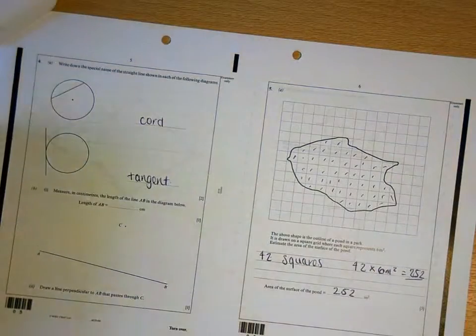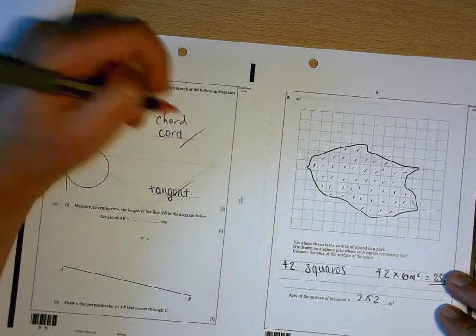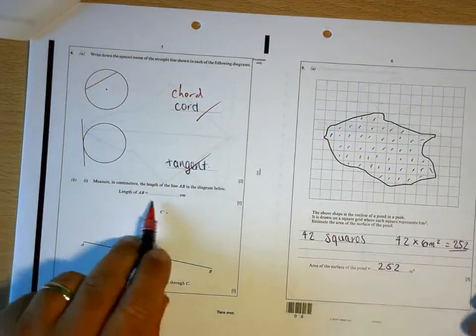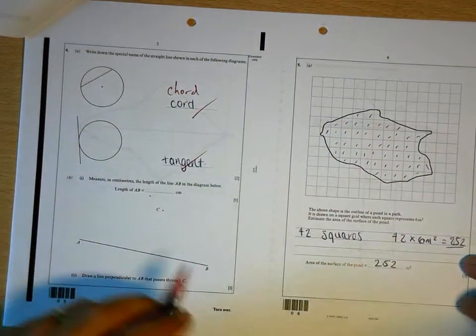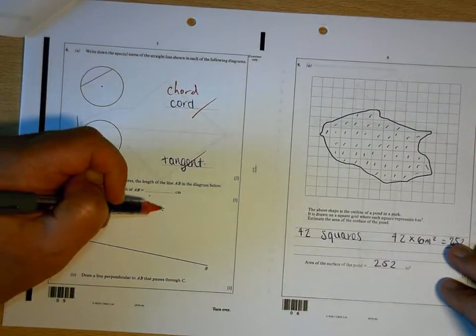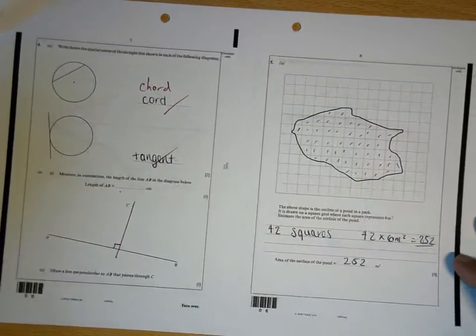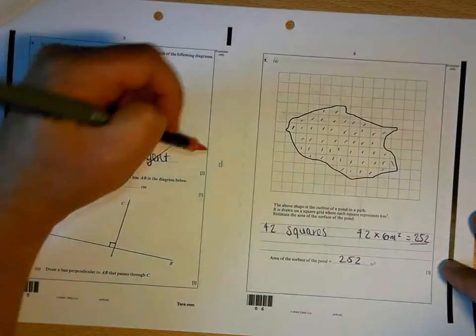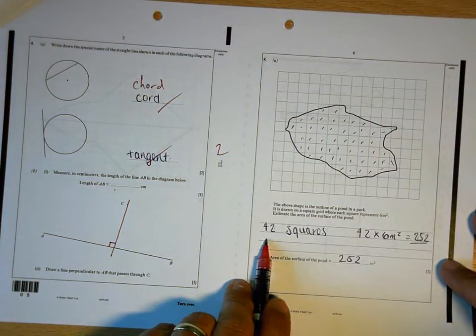Chord and tangent are correct, but there is a H in chord. I would have thought you'd be able to use a ruler and I'd like to think you would have had one at home. The perpendicular line is one that cuts at right angles like that. 42 squares is a bit low.